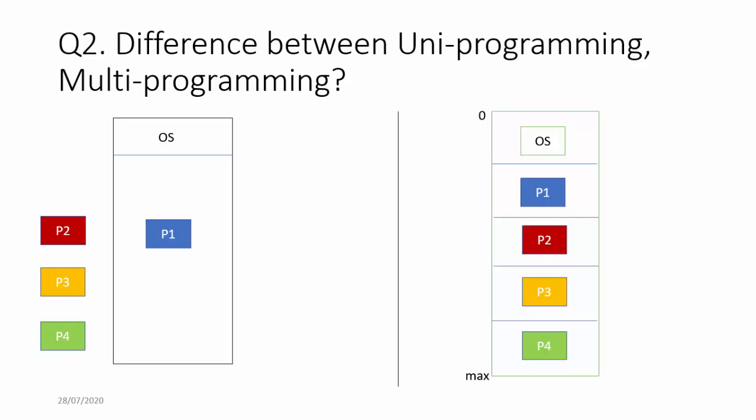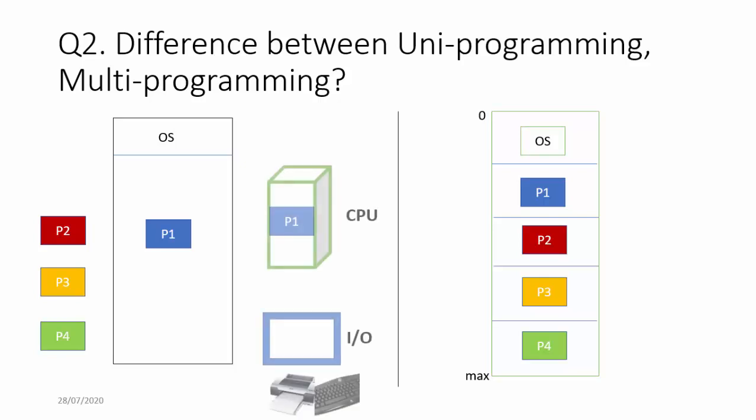How does the working differ for uniprogramming and multiprogramming? In uniprogramming, suppose P1 is in the system — P1 starts executing using the CPU. If at any point P1 requires some input/output, it will shift to one of the I/O devices. For example, if P1 needs to print a document, while it is printing using the printer the CPU is idle. We cannot shift the CPU to another process because there is only one process in the RAM, so CPU time is being wasted. This is the drawback of uniprogramming.